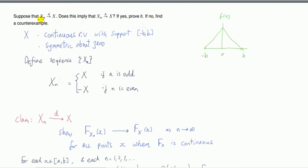Suppose that we've got a sequence of random variables that converges in distribution to X. Does this imply it converges in probability to X? Well it doesn't, so we're going to provide a counterexample.